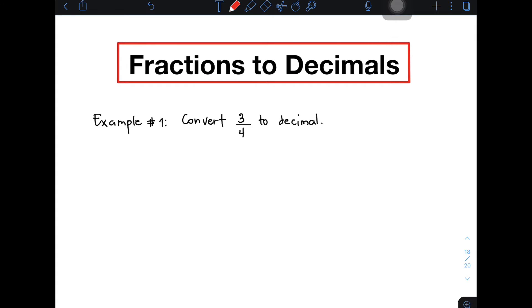So we have your example number one. Convert 3 over 4 or 3 fourths to decimal. So how are we going to do this kind of problem? We will do long division. So as you can see, you have here your divisor and this is your dividend.